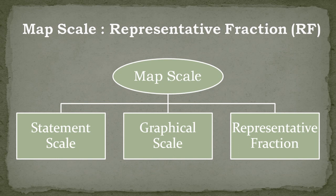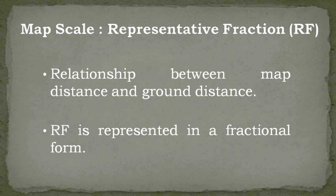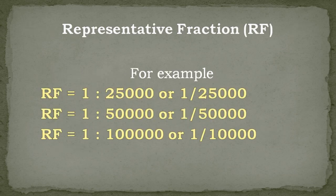From this figure you can easily understand that there are three ways to represent map scale: the first one is statement scale, the second is the graphical scale, and the third one is the representative fraction. Now, what is a map scale? A map scale is the relationship between the distance between two points on the map and the corresponding distance between the same two points on the ground. A representative fraction shows that relationship in units of length and is generally represented in a fractional form, for example RF = 1:25,000 or RF = 1:50,000 or RF = 1:1 lakh.